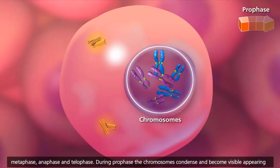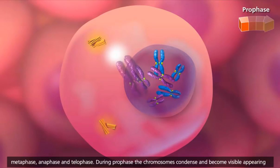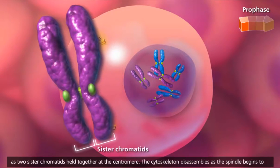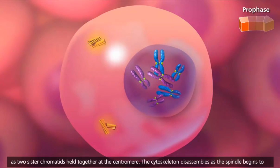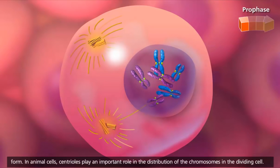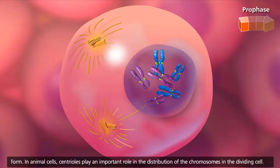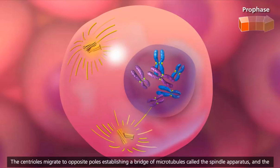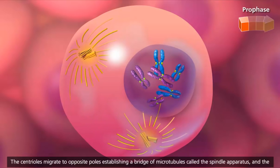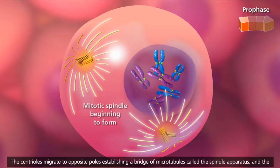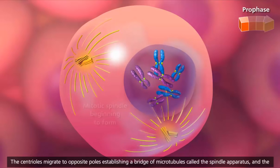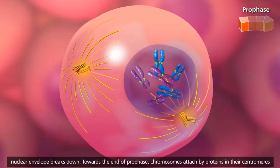During prophase, the chromosomes condense and become visible, appearing as two sister chromatids held together at the centromere. The cytoskeleton disassembles as the spindle begins to form. In animal cells, centrioles play an important role in the distribution of the chromosomes in the dividing cell. The centrioles migrate to opposite poles, establishing a bridge of microtubules called the spindle apparatus, and the nuclear envelope breaks down.